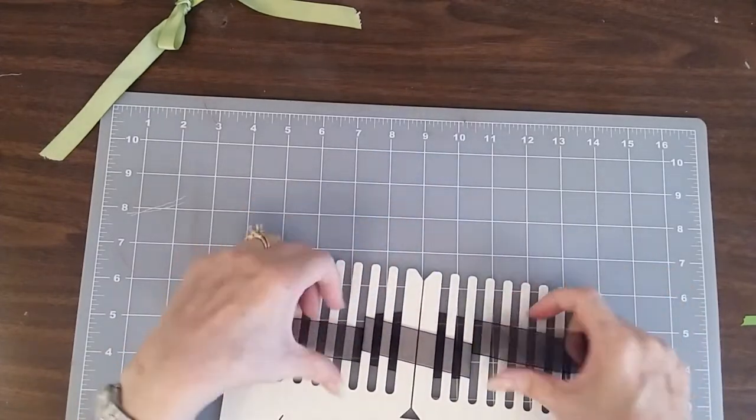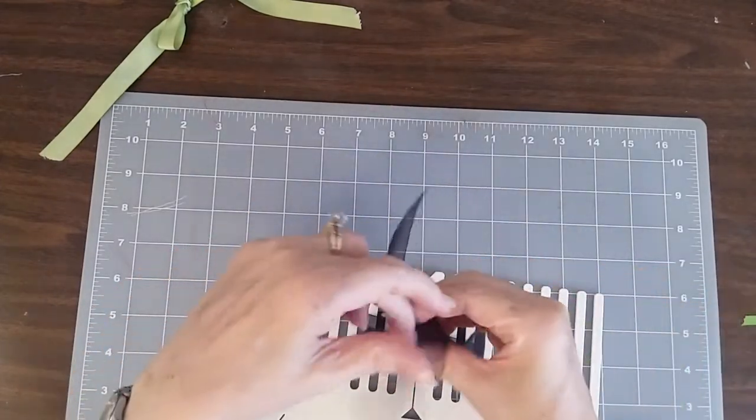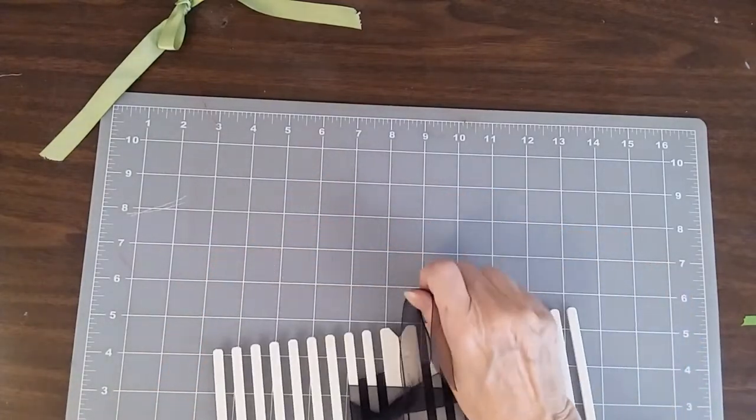And if you want a multi looped bow just keep wrapping around however many loops you want. Again, even out your ends, cross them over, make them vertical.